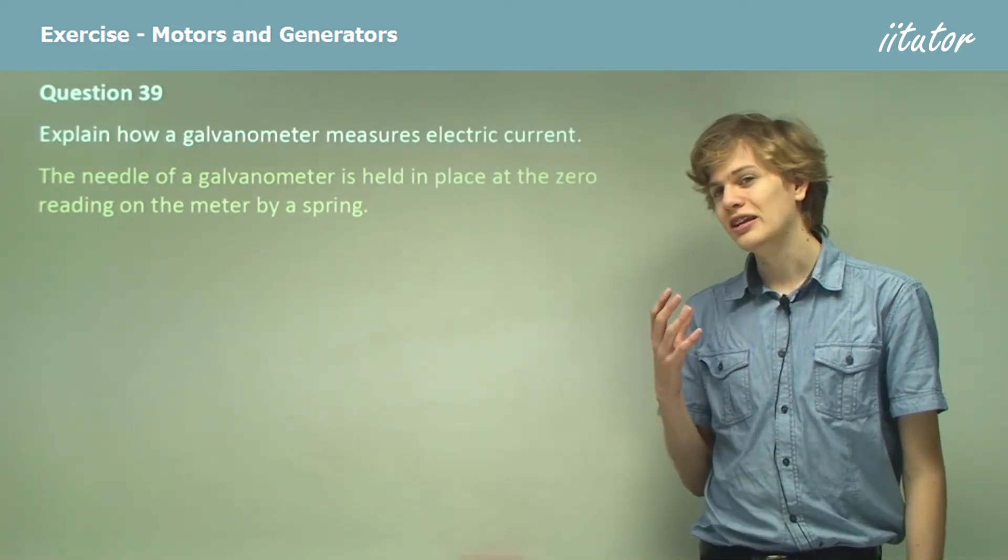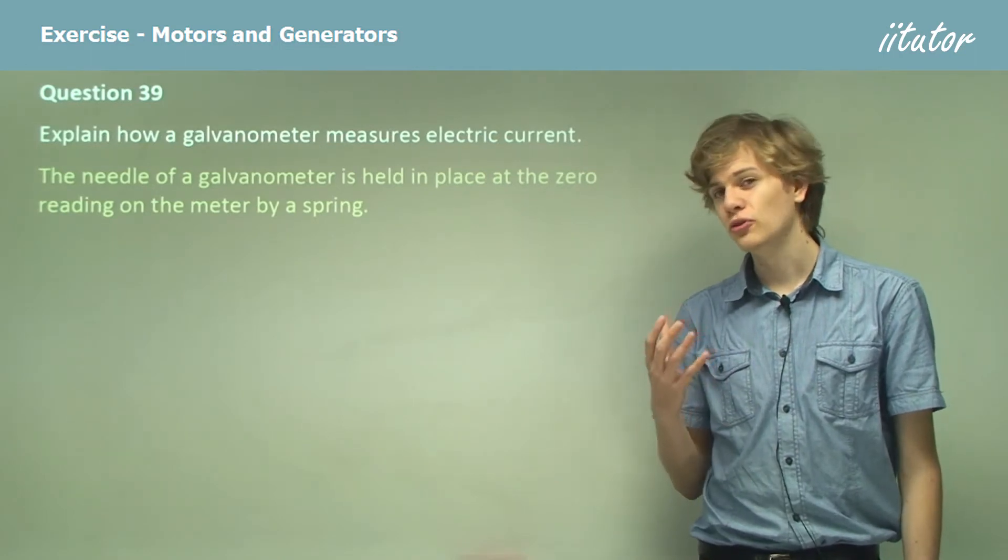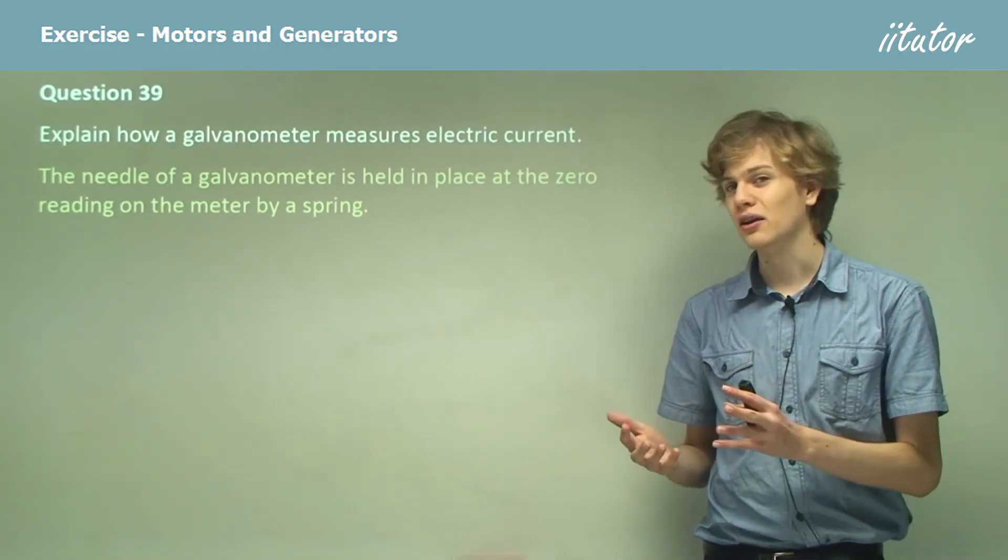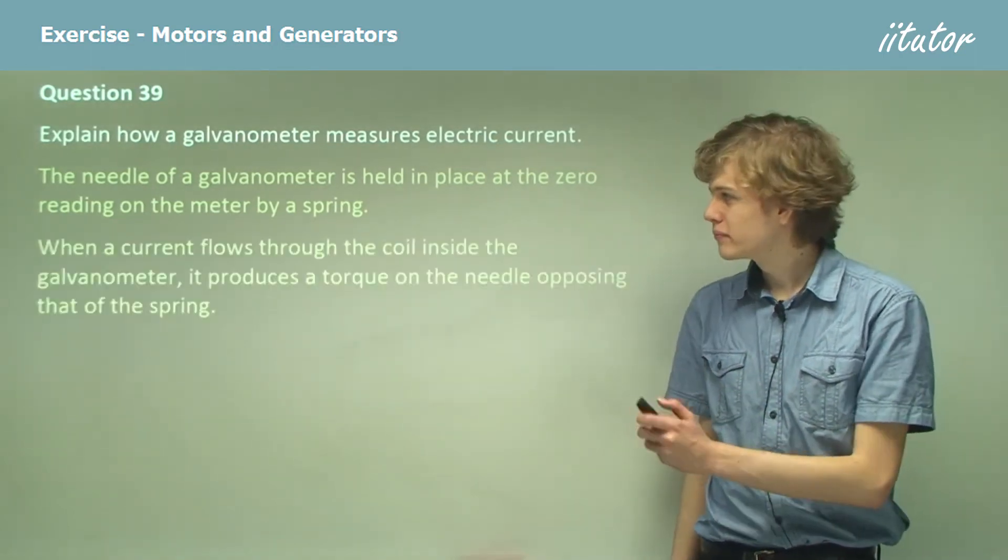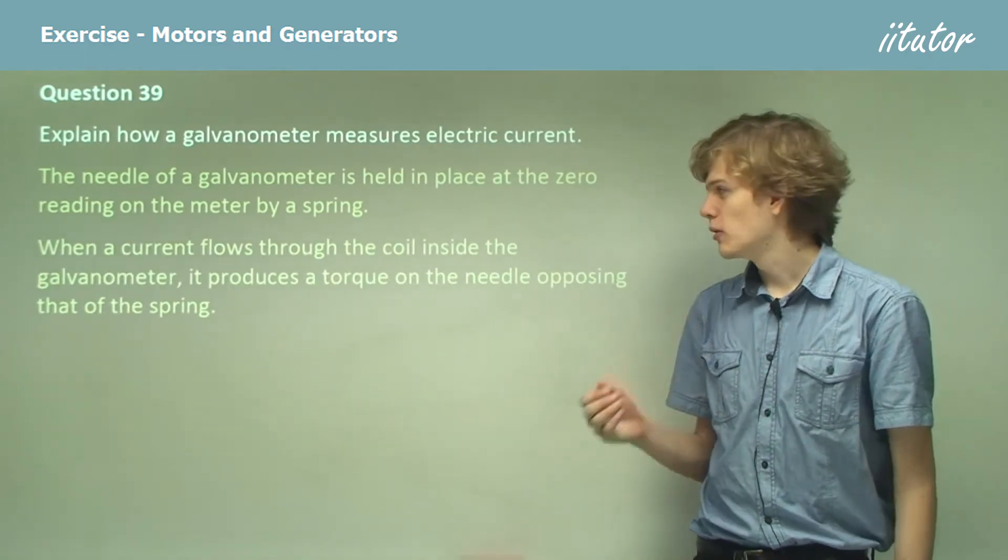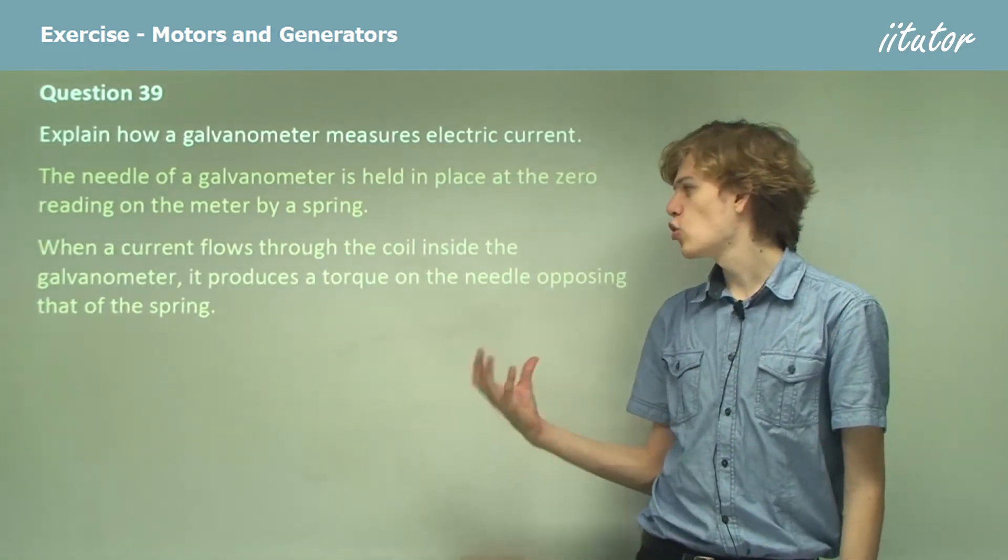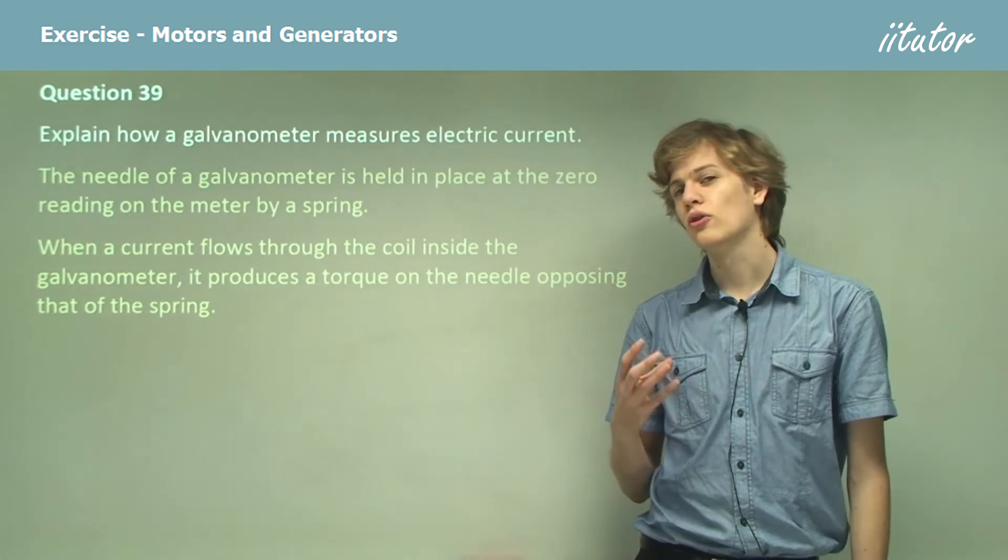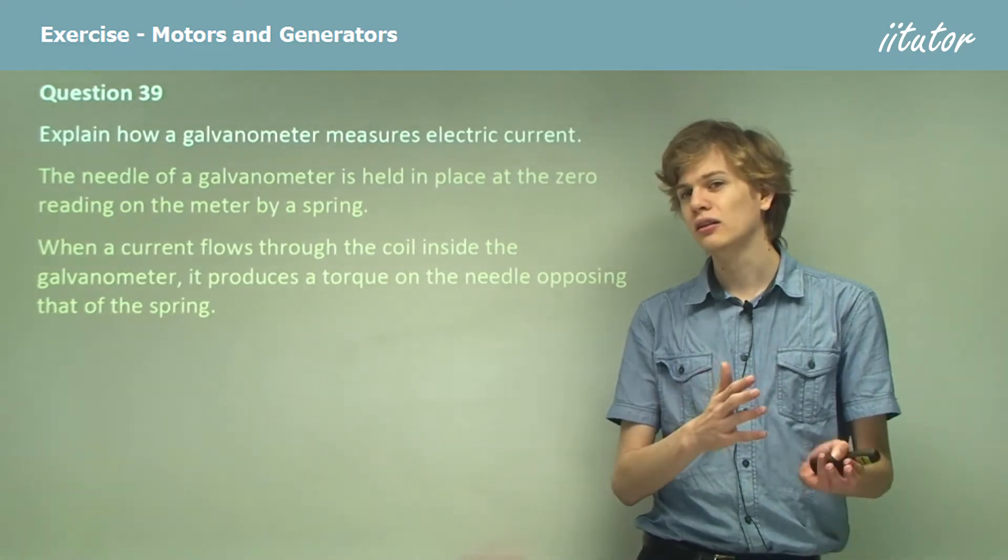So what we need now is a way of using the motor effect to move the needle back and forth. When a current flows through the coil inside the galvanometer, it produces a torque on the needle opposing the torque of the spring. So the needle moves up.